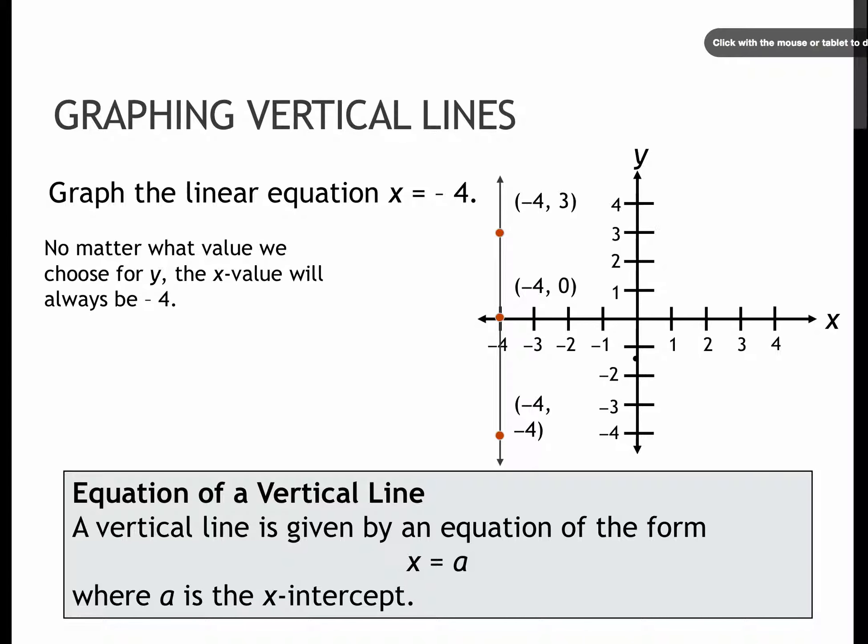Now, vertical and horizontal lines are a little bit different. They're not really considered a standard form or slope-intercept form, but it's good to talk about them. When you have just one variable, so just an x or just a y, you're either going to have a vertical line or a horizontal line.